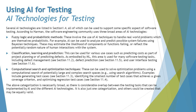Talking about fuzzy logic and probabilistic methods — these involve the use of AI techniques to handle real-world problems which are themselves probabilistic. For example, AI can be used to analyze and predict possible system failures using Bayesian techniques, estimating the likelihood of components or functions failing, or reflecting the potentially random nature of human interactions with the system. These techniques help predict the frequency of anticipated failures, based on past failure data or signals like weakening component strength.